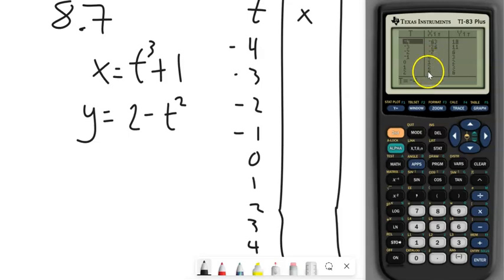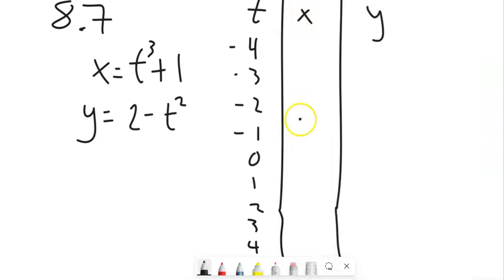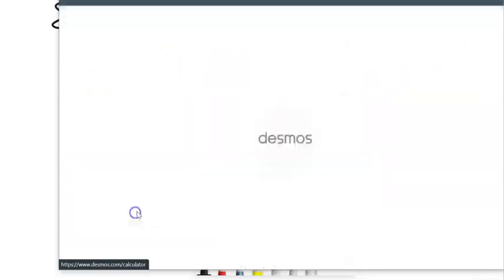And then we could graph those, sketch a graph of them. This graph is going to be crazy. But we could sketch a graph of them and get them from there. So again, you can get these values, plugging them in one at a time.